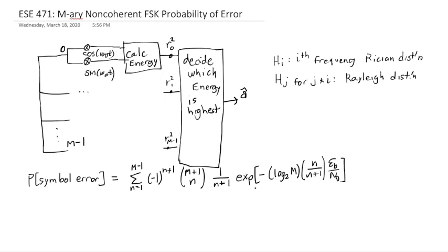Again, we have these exponential terms when we end up with a non-coherent receiver. This is similar to that. Of course, I don't expect you to memorize this, but this is a formula that we should have available to us if we ever need to calculate the probability of symbol error for non-coherent FSK.